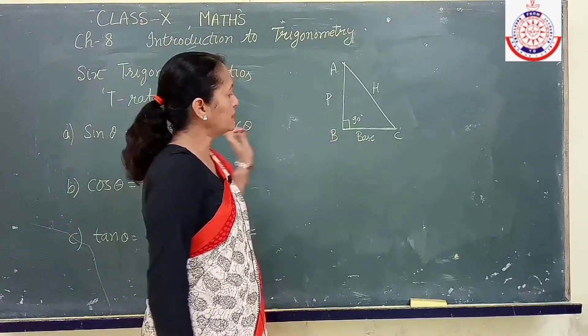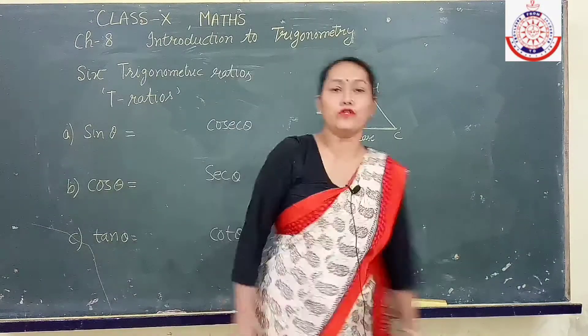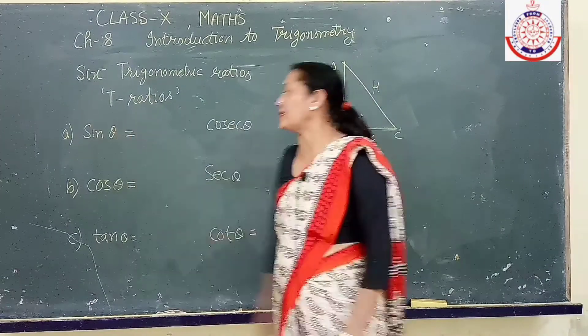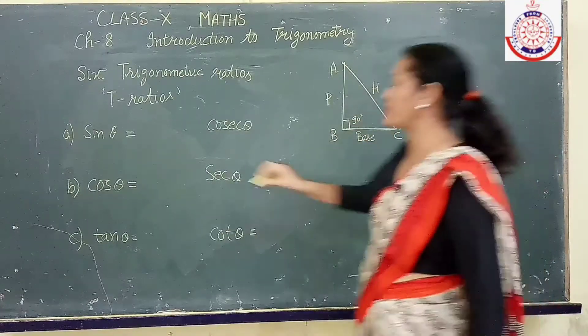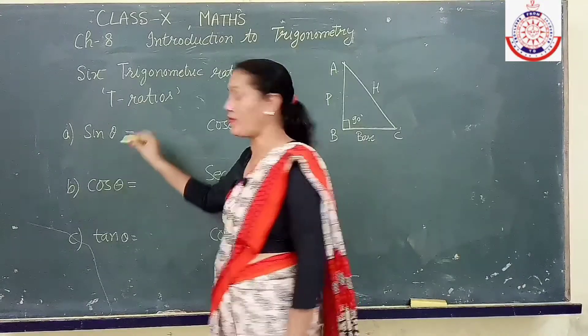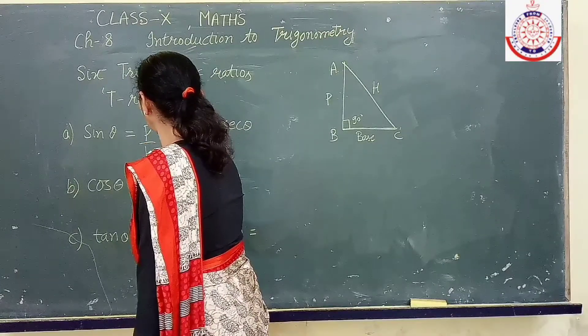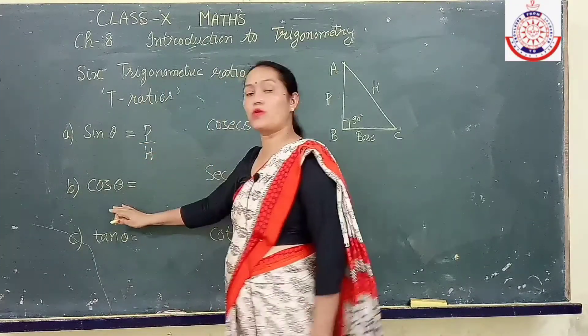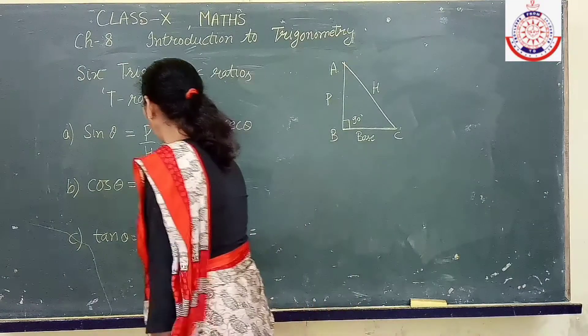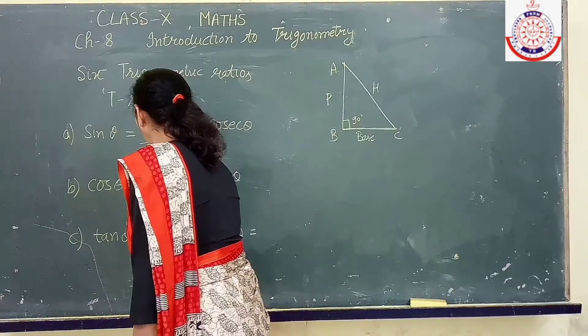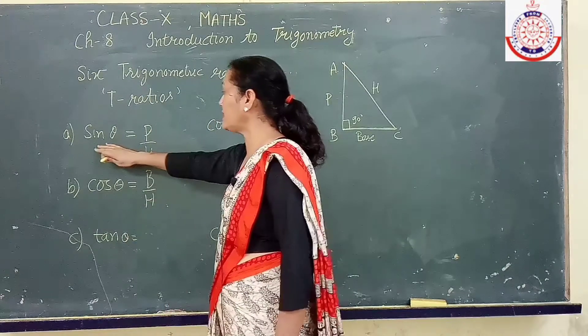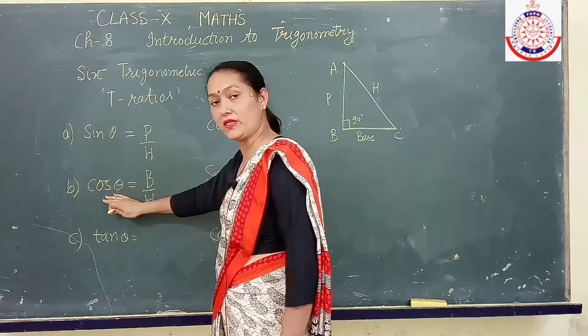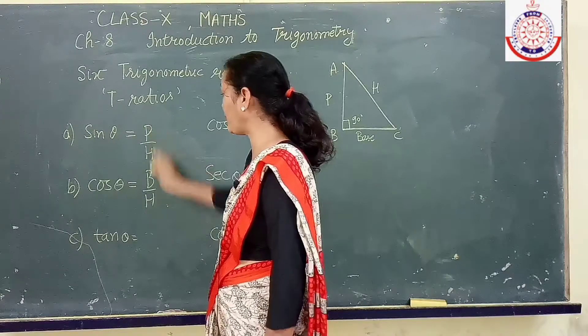So how to write these formulas? First of all, if we talk about sin theta, sin theta is perpendicular upon hypotenuse. You will have to learn all these formulas. Next one is cos theta. That is base upon hypotenuse. Tangent theta is sin theta upon cos theta. So we get perpendicular over base.